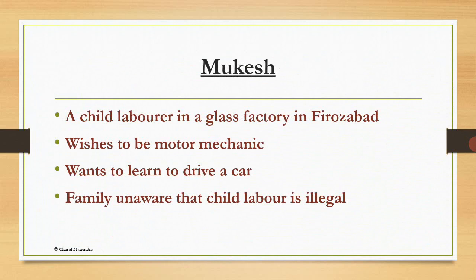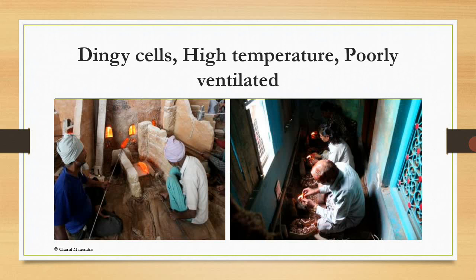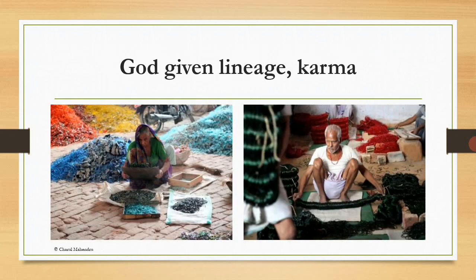Working conditions in glass furnaces: there is high temperature, dingy cells, and they are poorly ventilated. Children lose eyesight at an early age. You can see the pictures and understand that these burning furnaces create high temperature, and there is no ventilation.